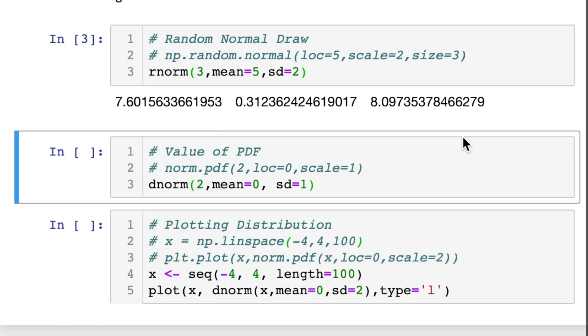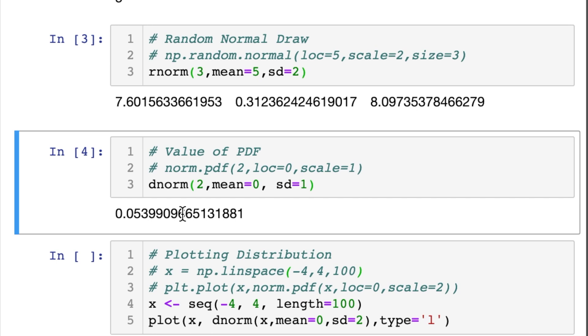There is another function in R called dnorm, which gives you the value of the PDF of the normal. So you can give it 2, mean equals 0, standard deviation equals 1, and that's the number it spits back, 0.05.